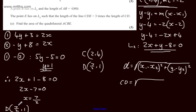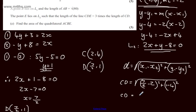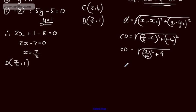So CD equals the square root of (7/2 minus 2) squared plus (1 minus 4) squared. Tidying up: 7/2 minus 2 is 3/2, and 1 minus 4 is minus 3. So CD equals the square root of (3/2) squared plus (minus 3) squared, which is the square root of 9 over 4 plus 9.